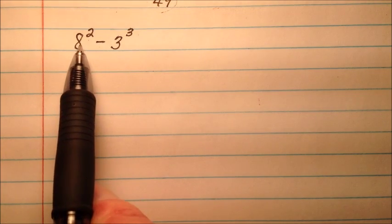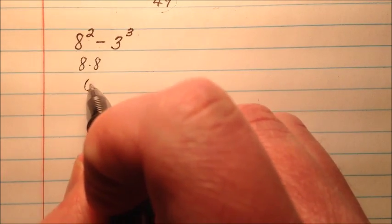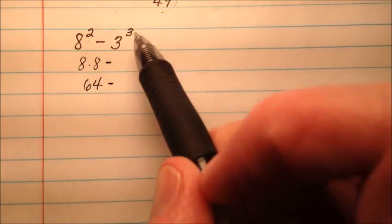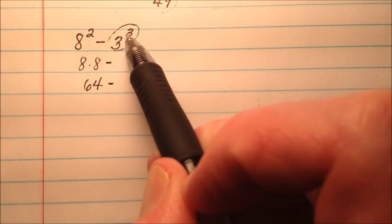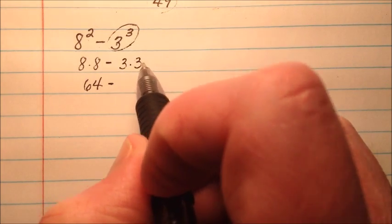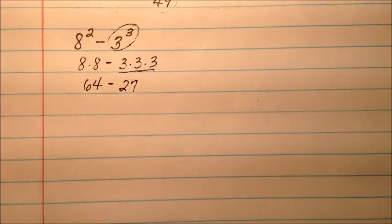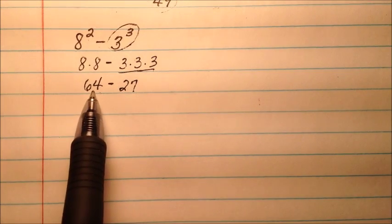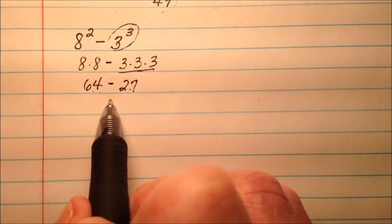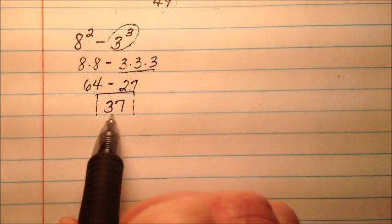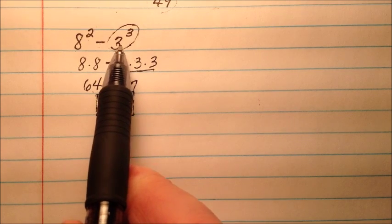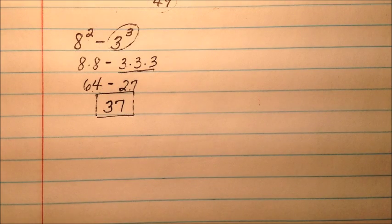8 to the power of 2, or 8 squared, is 8 times 8, which equals 64. Then 3 cubed is 3 to the power of 3, so it's three 3's all multiplied together: 3 times 3 is 9, times 3 is 27. So when we do the subtraction, 64 minus 27 is going to be 37. So 8 squared minus 3 cubed is 37 when we simplify that.